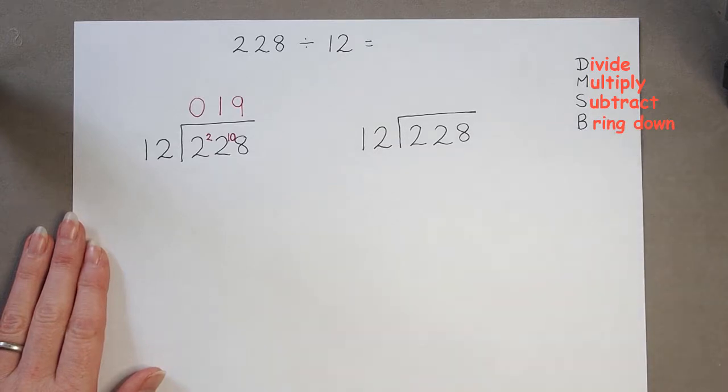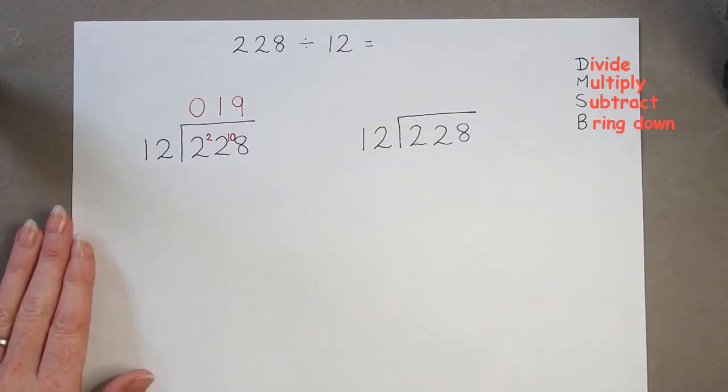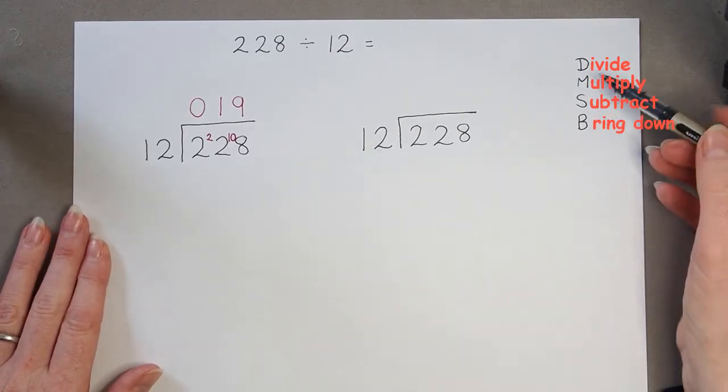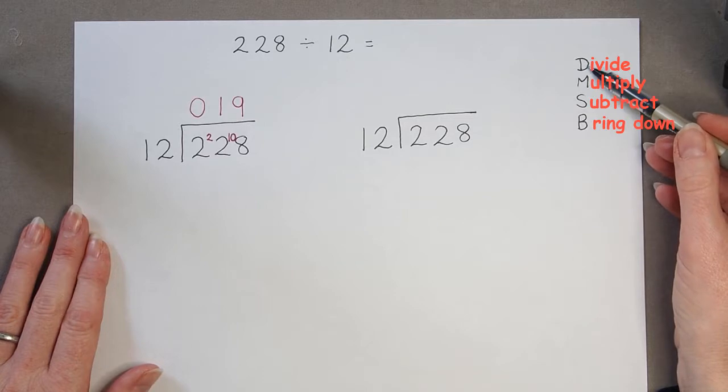We can associate that with our long division. Does McDonald's sell burgers? So first of all, we've got to D, divide.